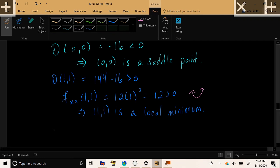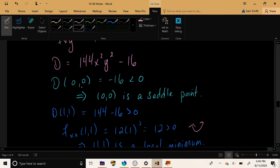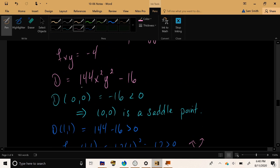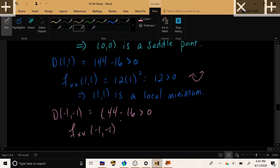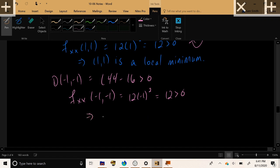And finally, for (-1, -1), if we plug those points into our determinant, because of the squares, we actually get exactly the same outcome that we got from positive 1, positive 1. So we get 144 minus 16, positive. Plug that into the second derivative in the x-direction because of the square. We once again get a positive result. And once again, we conclude that this point is a local minimum.